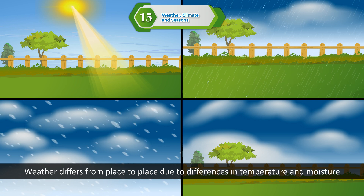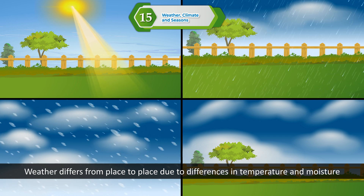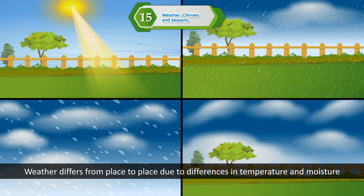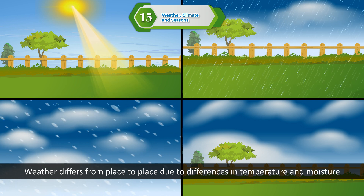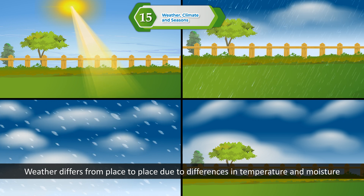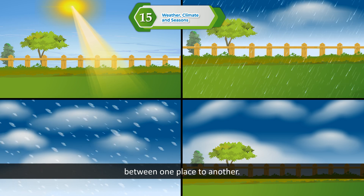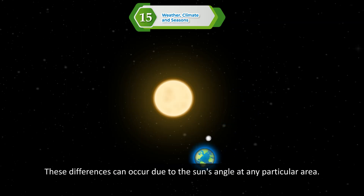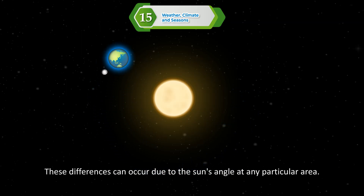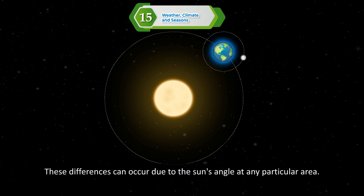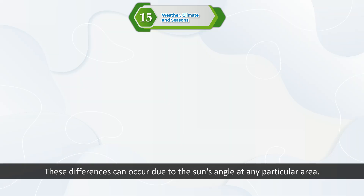Weather differs from place to place due to differences in temperature and moisture between one place and another. These differences can occur due to the sun's angle at any particular area.